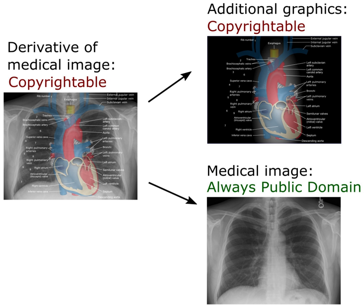The licenses differ by several combinations that condition the terms of distribution. They were initially released on December 16, 2002 by Creative Commons, a U.S. nonprofit corporation founded in 2001. There have also been five versions of the suite of licenses, numbered 1.0 through 4.0.